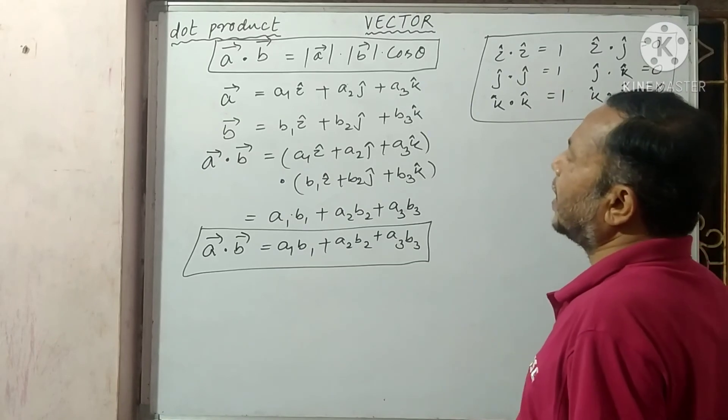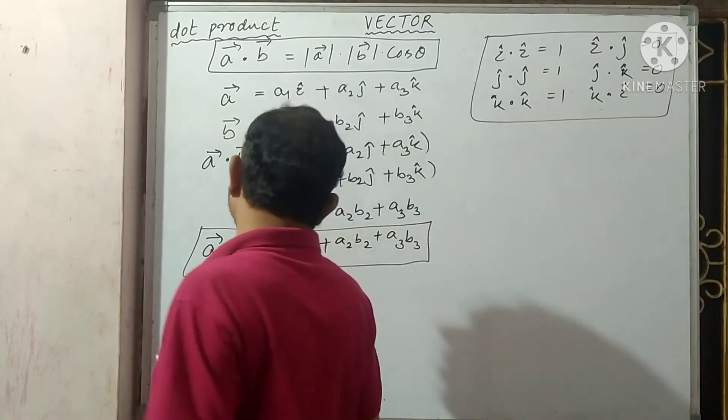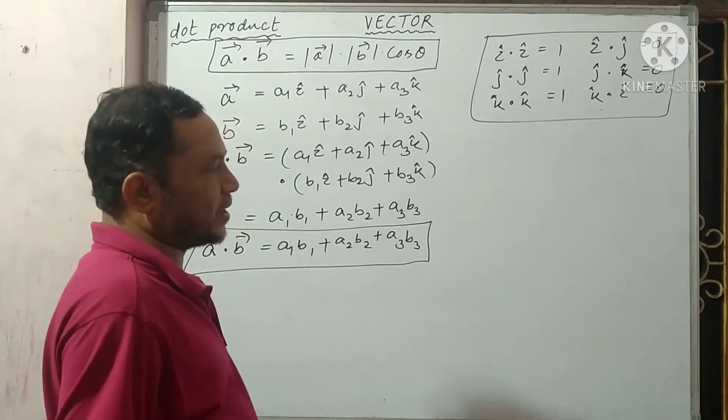And you know, i, j, k are unit vectors along x, y, and z axes respectively.